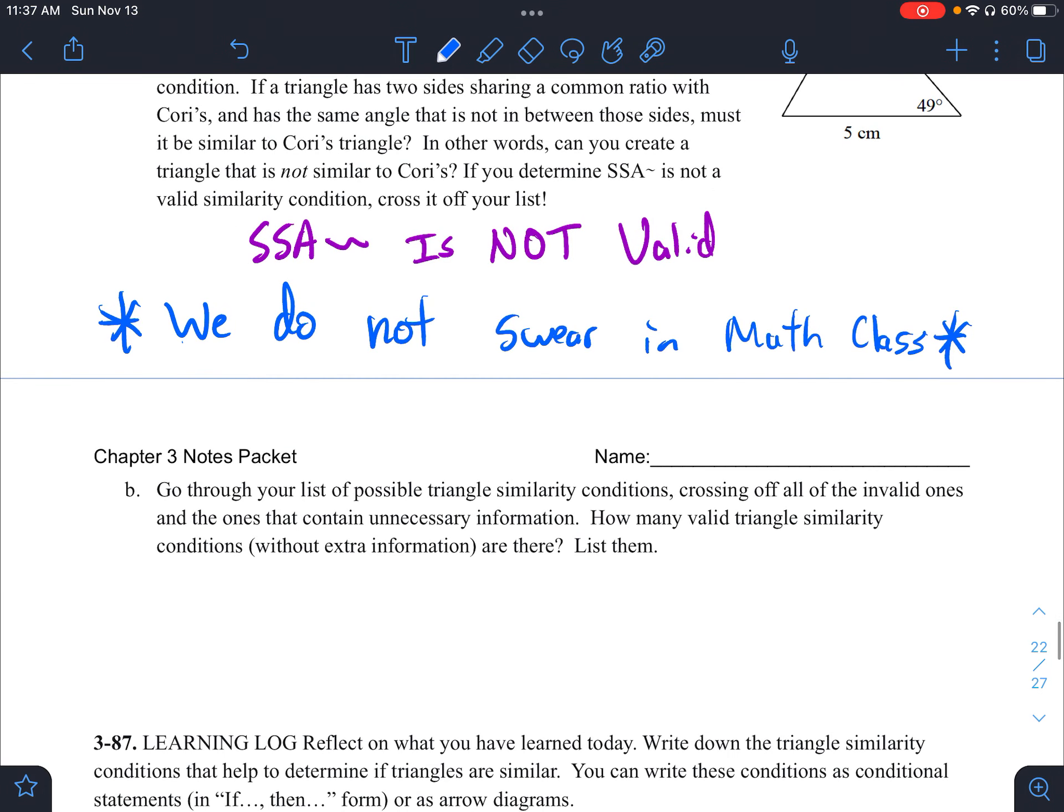So in letter B to end today, it says, go through your list of possible triangle. The only ones that work for us is angle angle similarity, side side side similarity, and side angle side similarity. And we've looked at these here now the last couple of days. So hopefully this is starting to catch on for us. So today your homework is 3-88 to 3-93 and there is a homework quiz as well. Have a good day. And like I said, I hope to see you tomorrow.